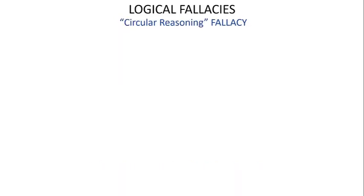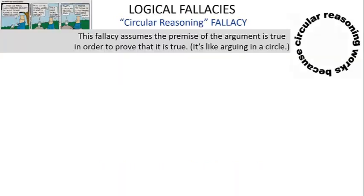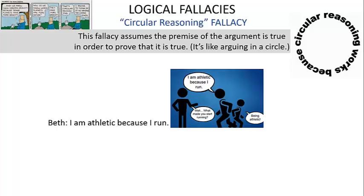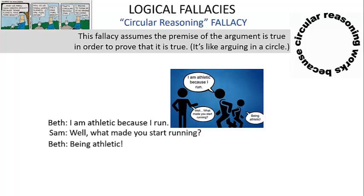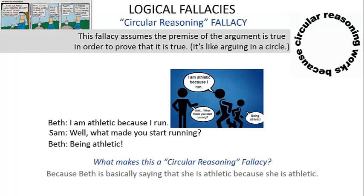The circular reasoning fallacy assumes the premise of the argument is true in order to prove that it's true — arguing in a circle. Beth says: I'm athletic because I run. When asked what made her start running, she answers: being athletic. Beth is basically saying she is athletic because she is athletic.